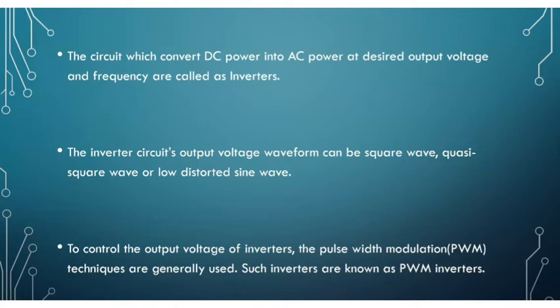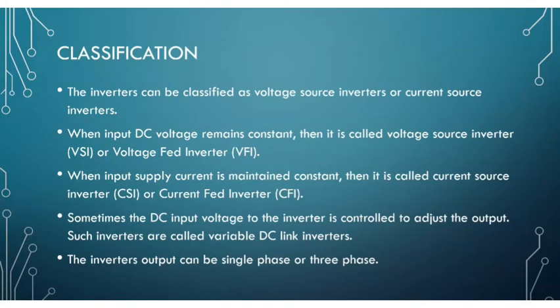To control the output voltage of an inverter, pulse width modulation techniques are generally used. Such inverters are called PWM inverters. So to control the output voltage we use pulse width modulation, and that type of inverter is called a pulse width modulation inverter.